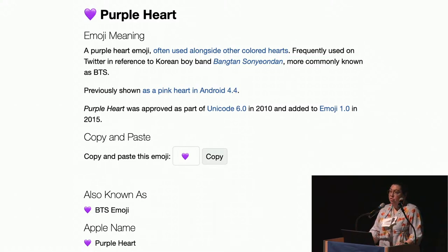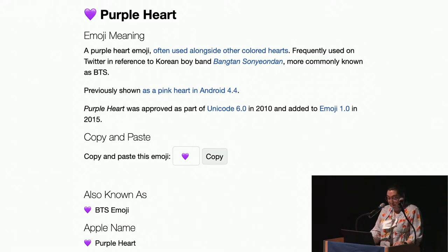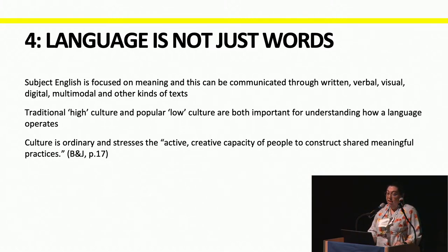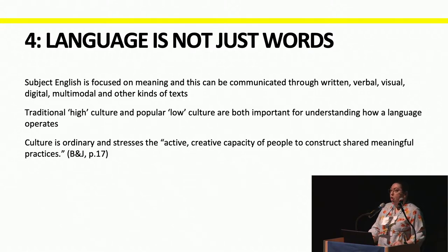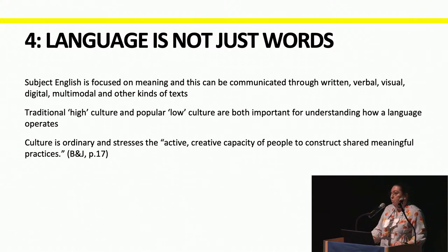This shows us the connection between technology and language. As technologies develop, so does the way that we use and share language and what we talk about. My fourth point is that language is not just words — subject English is focused on meaning, and that can be communicated in many different ways, both when you're reading a text and when you're creating one. We like to see multimodal texts being used, which means a combination of methods. Most of my examples today have come from popular culture, which is an incredibly important part of culture — it doesn't replace high culture, our study of Shakespeare still happens, but we should study what is good as well as what is great.